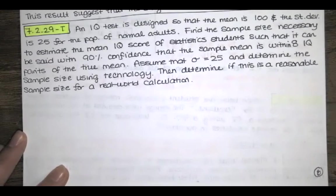An IQ test is designed so that the mean is 100 and the standard deviation is 25 for a population of normal adults. Find the sample size necessary to estimate the mean IQ score of statistics students, such that it can be said with 90% confidence that the sample mean is within 8 IQ points of the true mean.